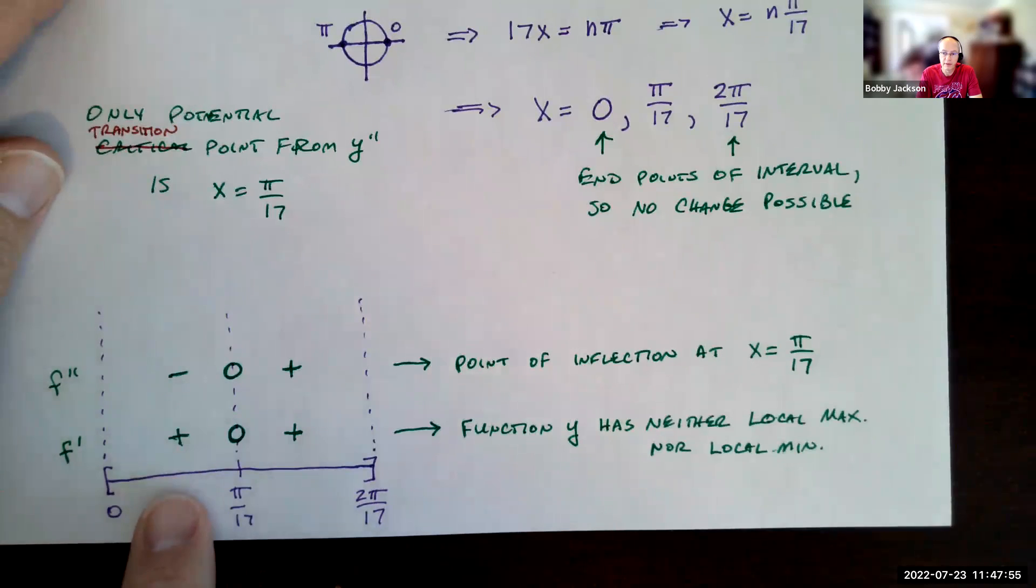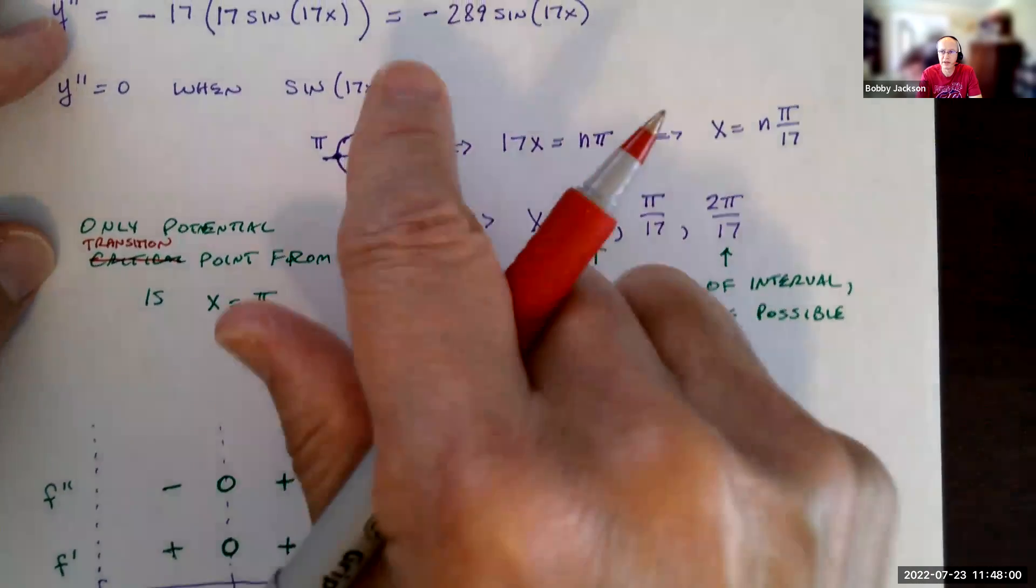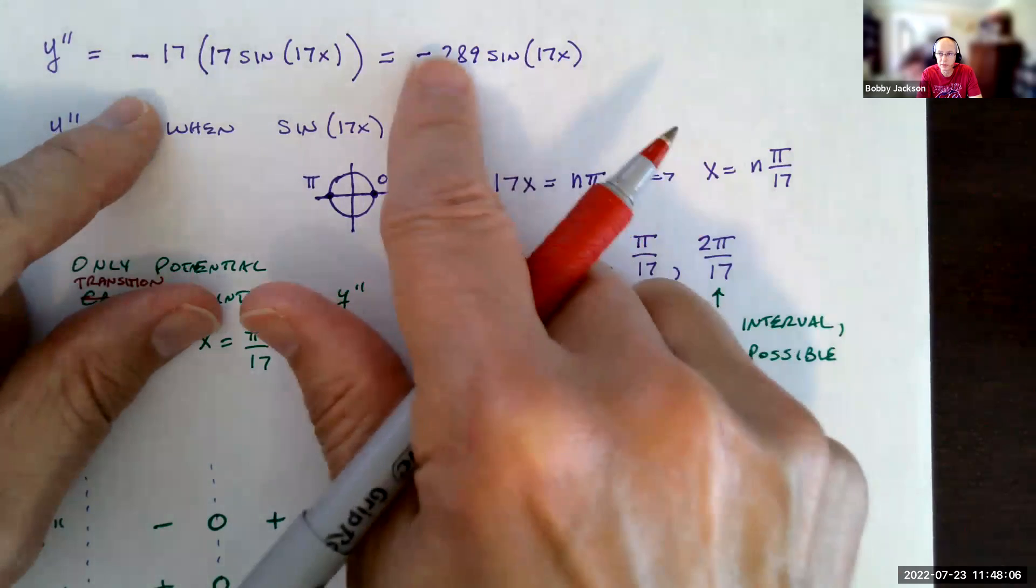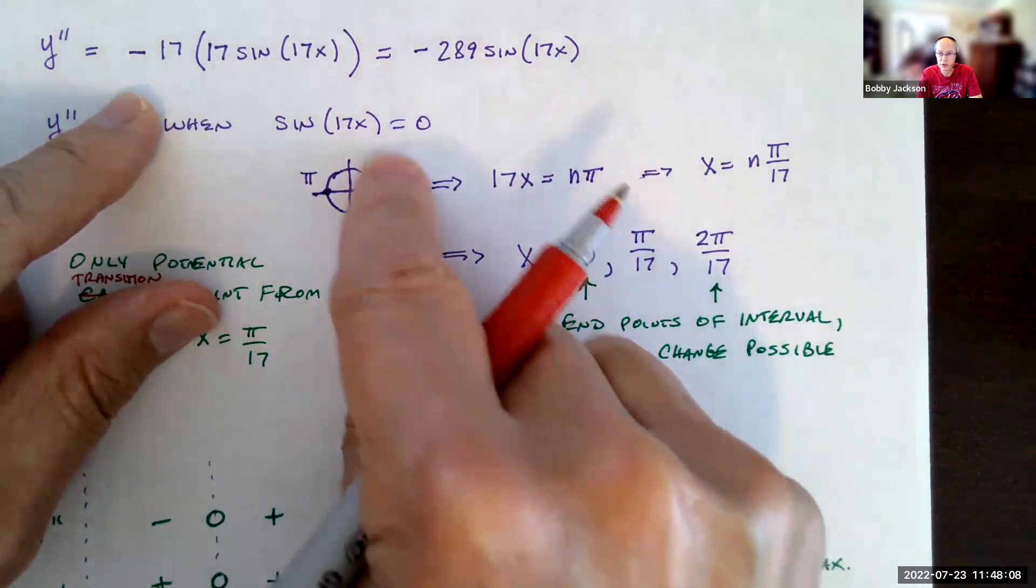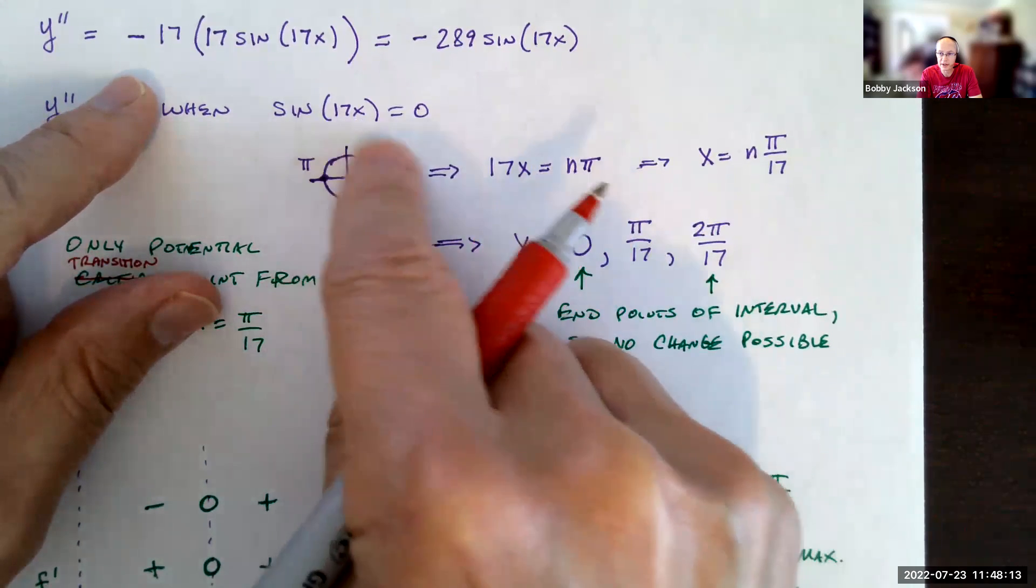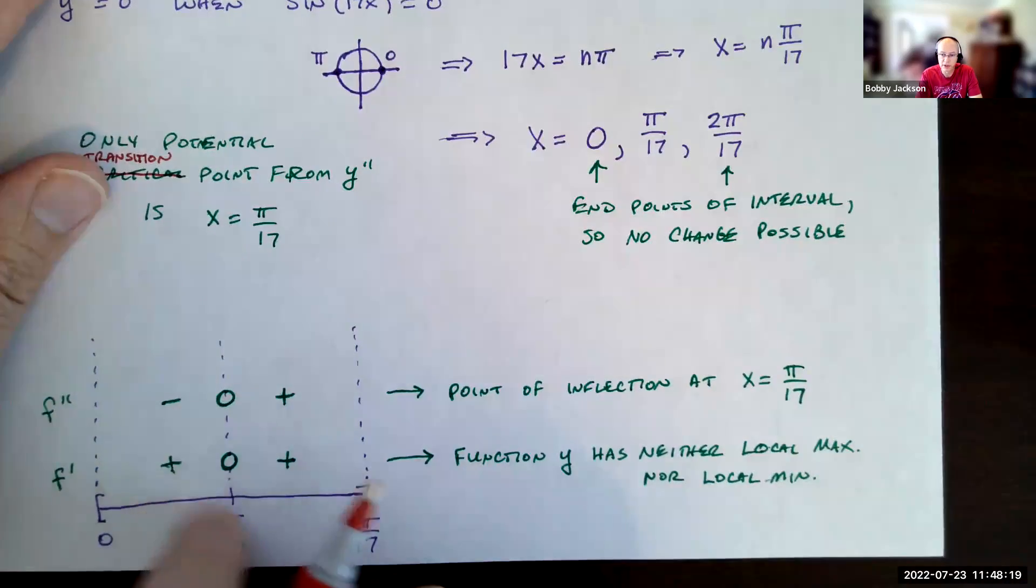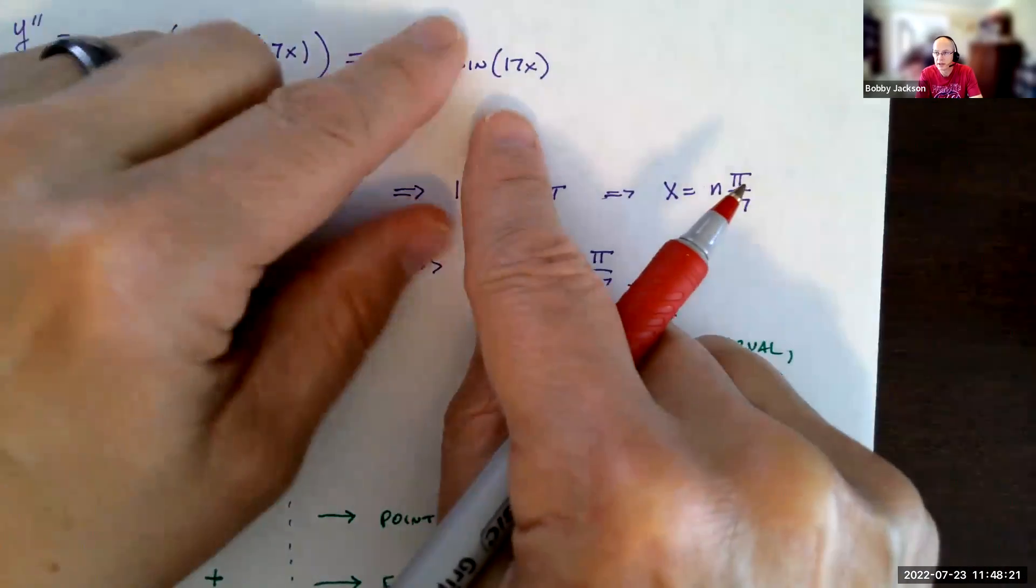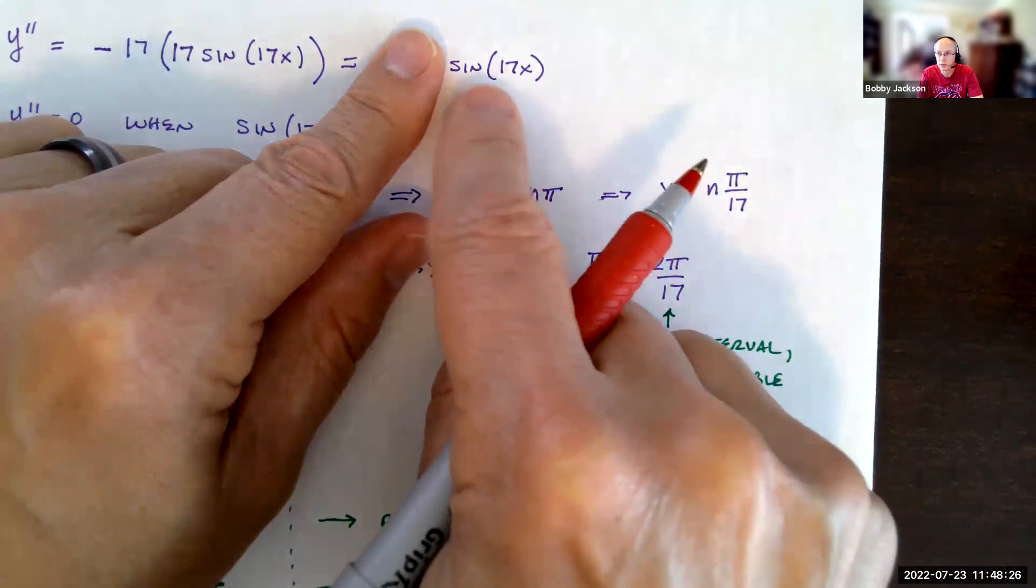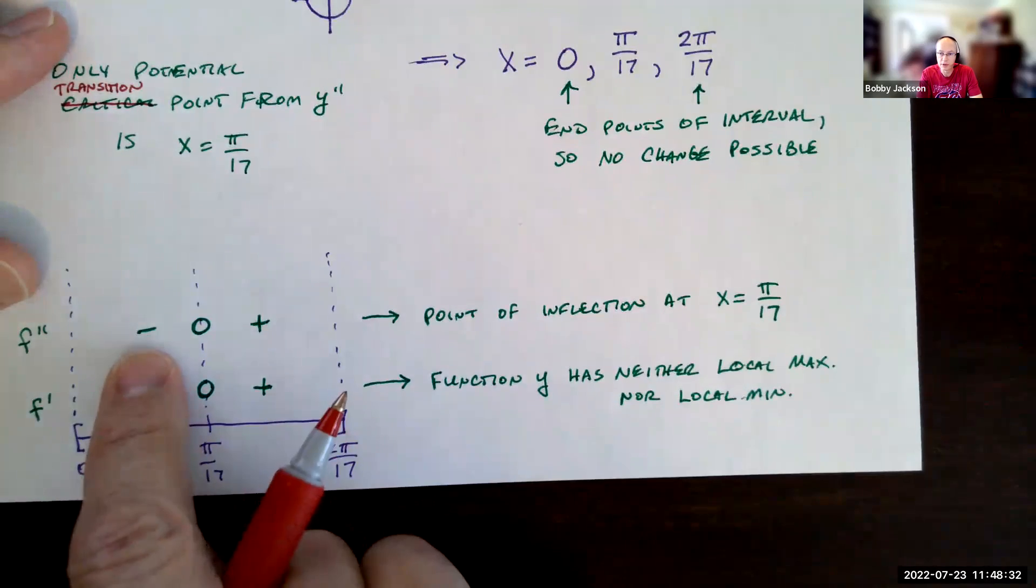Second derivative, though, if I check a value of the second derivative that's less than π/17, notice the function is sine of 17x times a negative number, that's our second derivative. So on the interval from 0 to π, the sine is going to be positive, and that's what's happening between 0 and π/17, because multiplying by 17, we're going from 0 to 17 times π/17, which is π. So from 0 to π, the sine is going to be a positive number, but we're multiplying by a negative, and so we get a negative result.